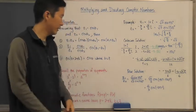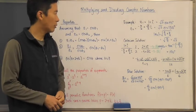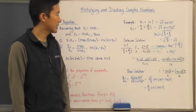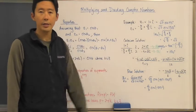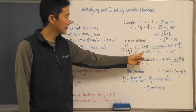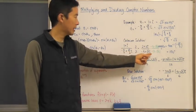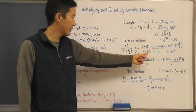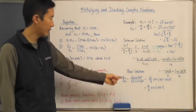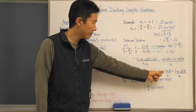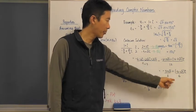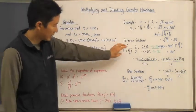Now let's look at an example of a quotient. For the Cartesian solution of z₁ divided by z₂, we multiply both numerator and denominator by 2 to simplify the fraction, then multiply by the conjugate of the denominator to rationalize it — that's negative three minus √3 i — giving a simplified form of (−3 + √3)/6 plus (−3 − √3)/6 · i. That's a fairly lengthy process.